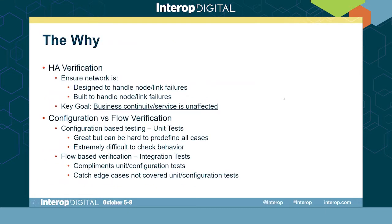HA verification is massively important. We want to ensure the network is designed to handle different node and link failures, and also that the network is actually built based on that design to handle those failures. The key goal is that business services are not affected at the point of failure. This raises the question: can you just use configuration-based verification?